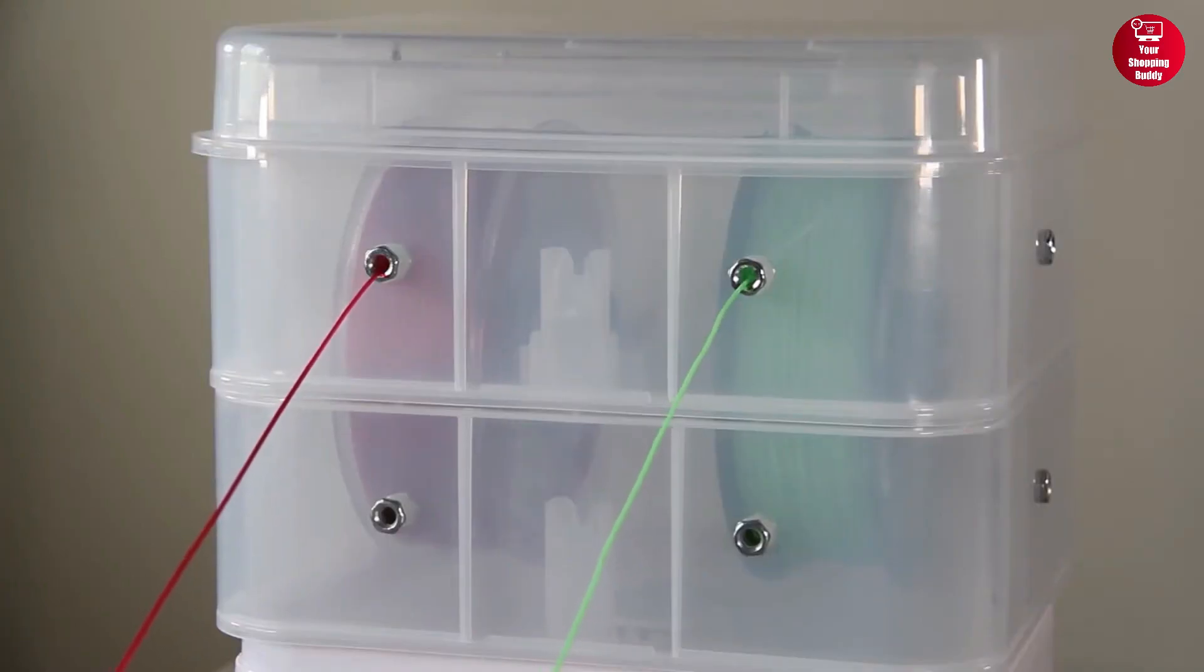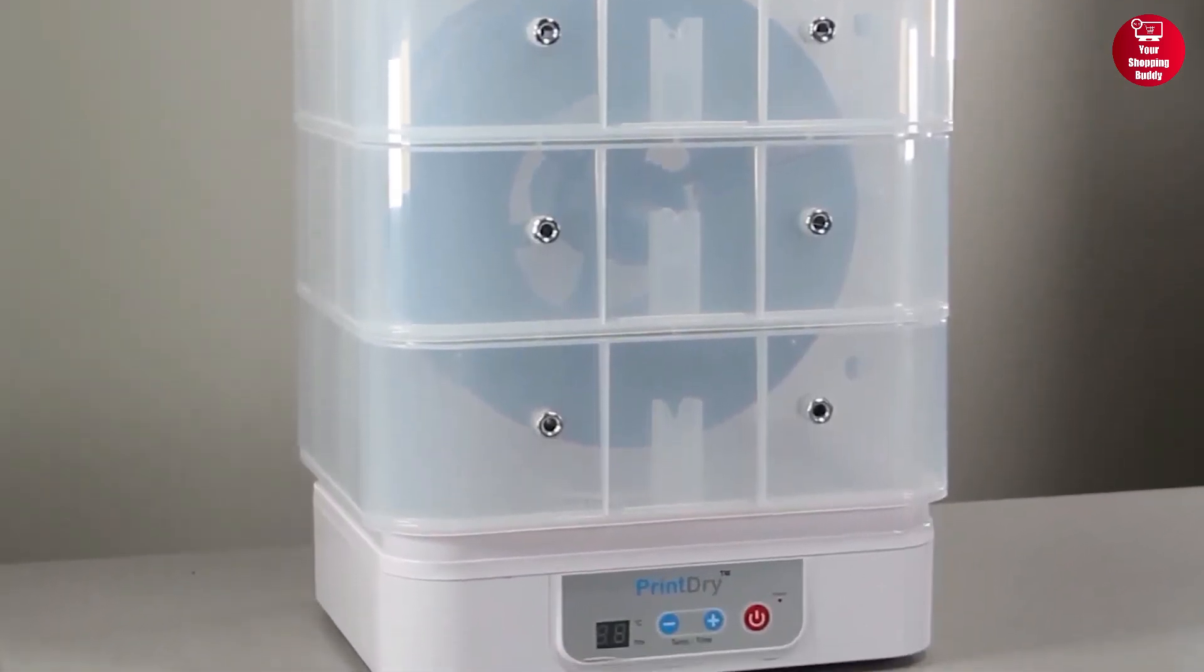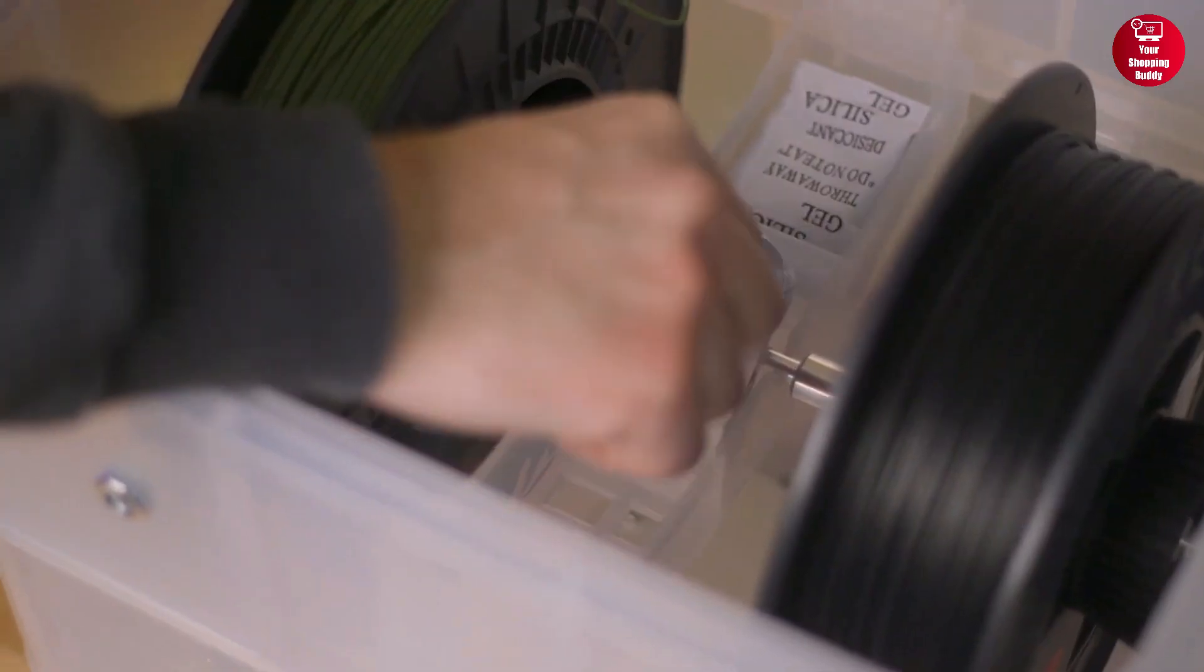The modular design also allows you to dry and feed up to four spools with the additional chamber kit and 5 kg spools with a large spool kit.